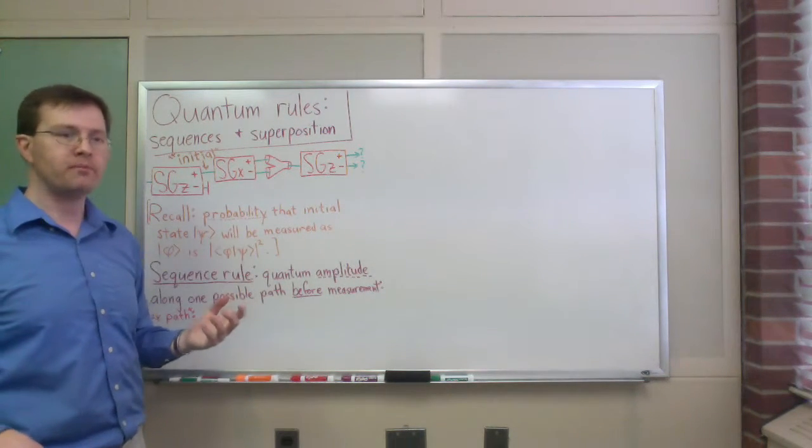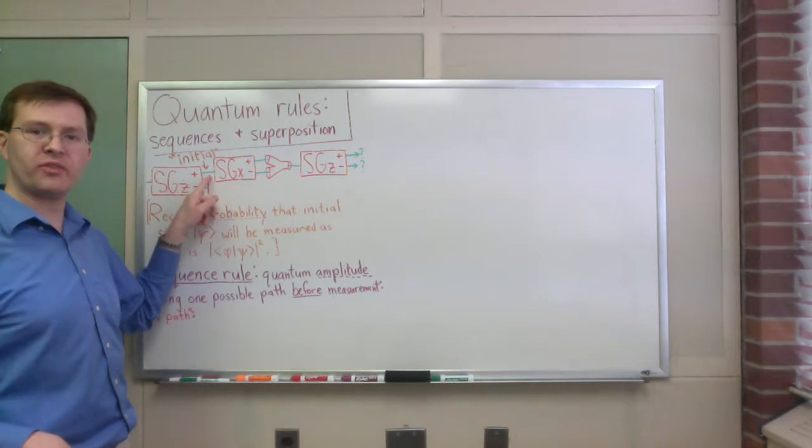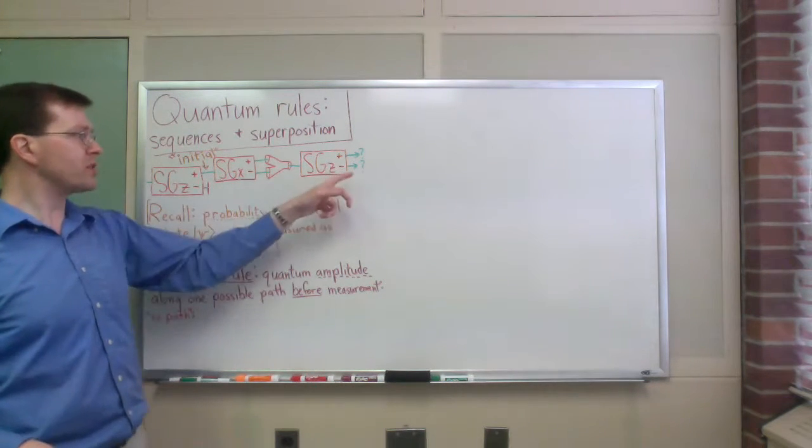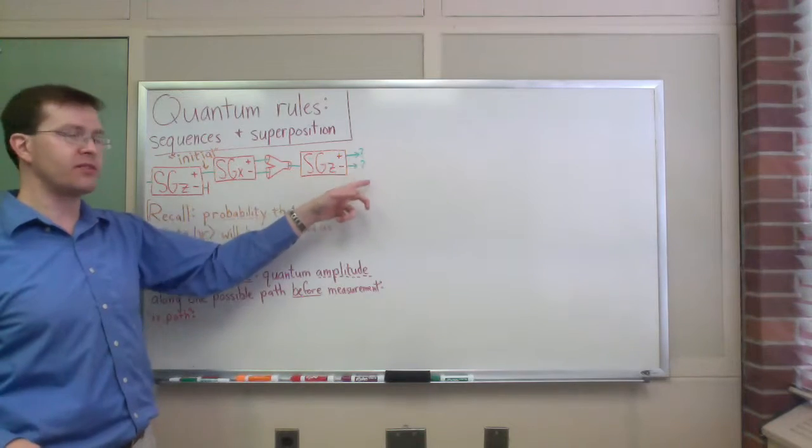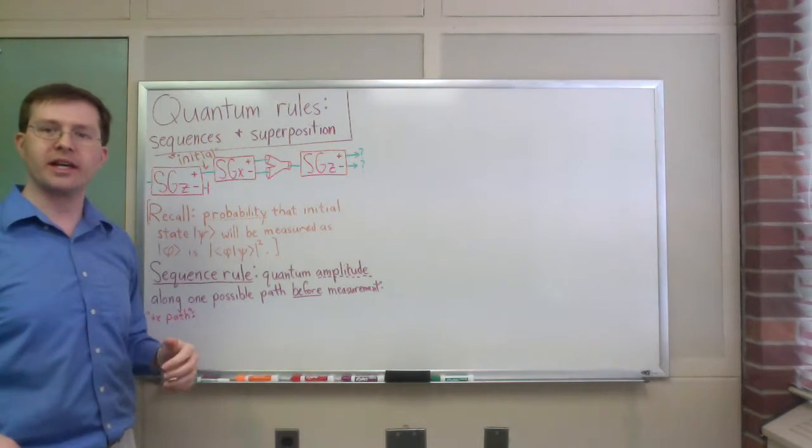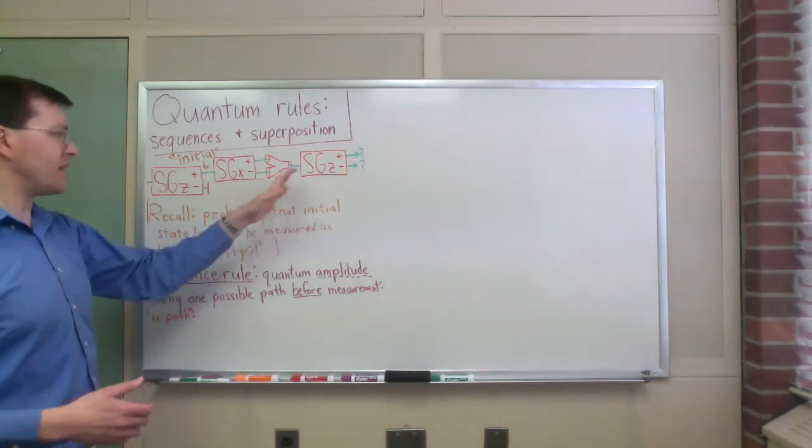And I want to know, given this initial state here, this initial beam of electrons in the plus z state here, what's the probability that I'm going to come out plus z versus minus z in my final state? So that's what I've got in this story.